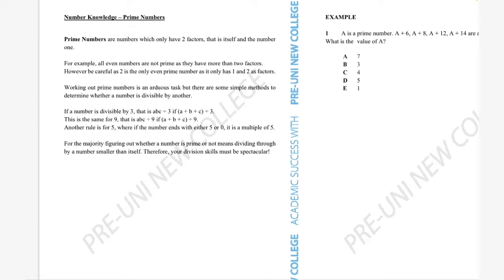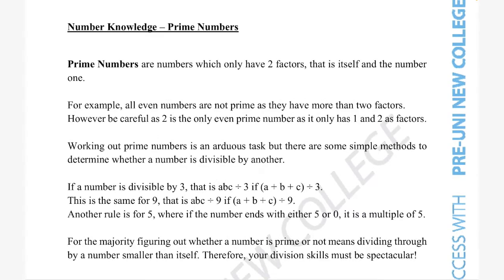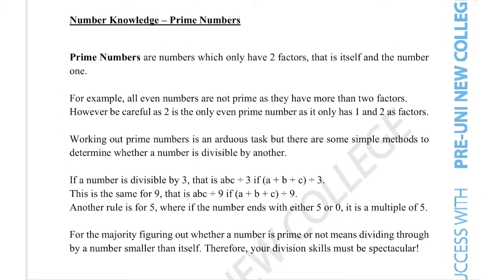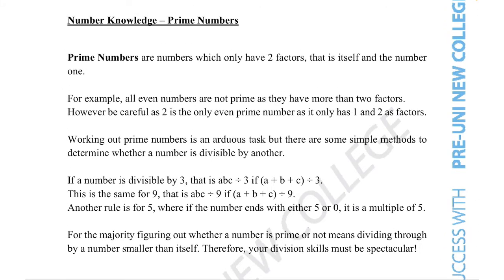Prime numbers are numbers that only have two factors: itself and the number one. That's the definition of prime numbers.